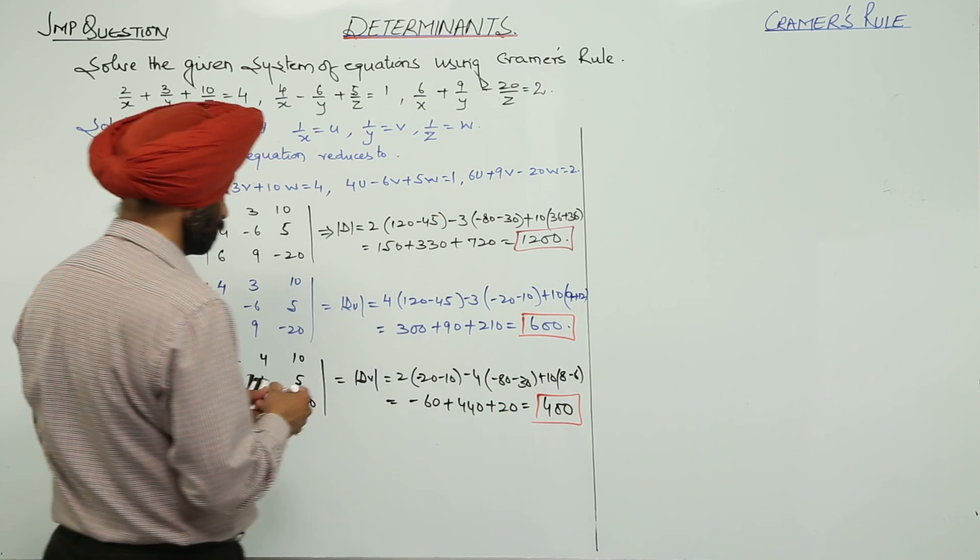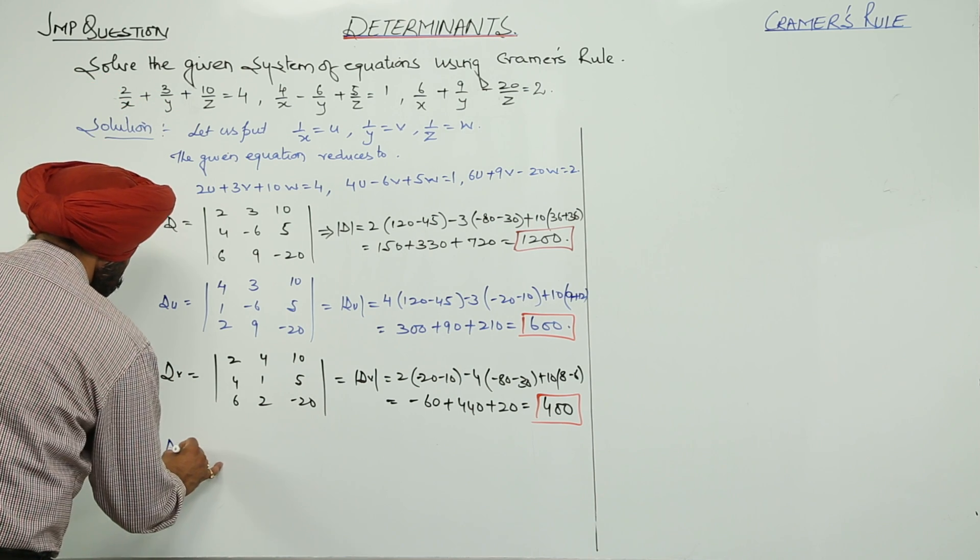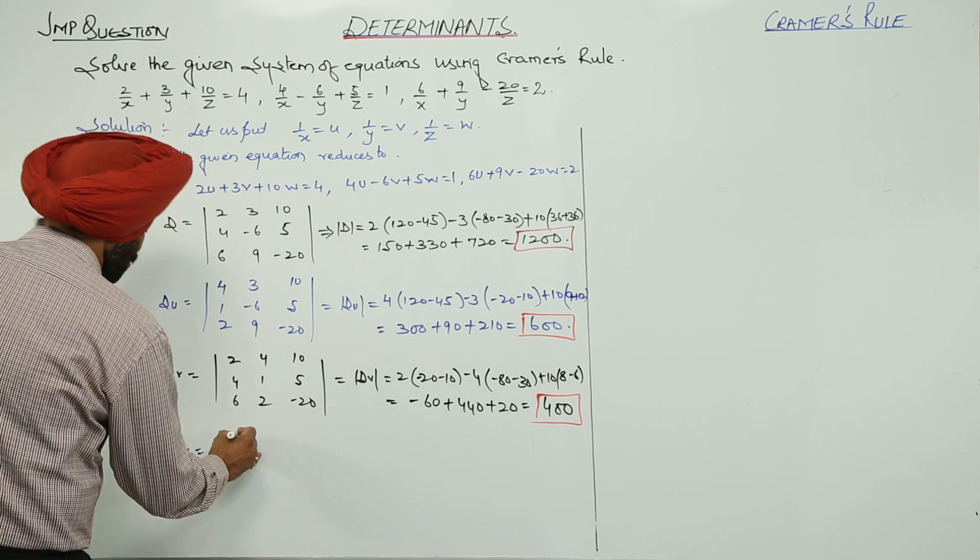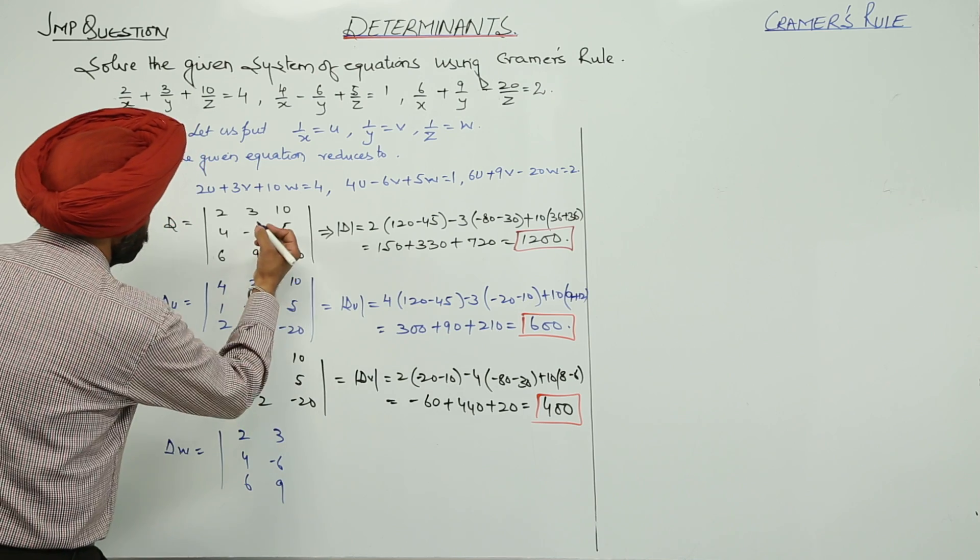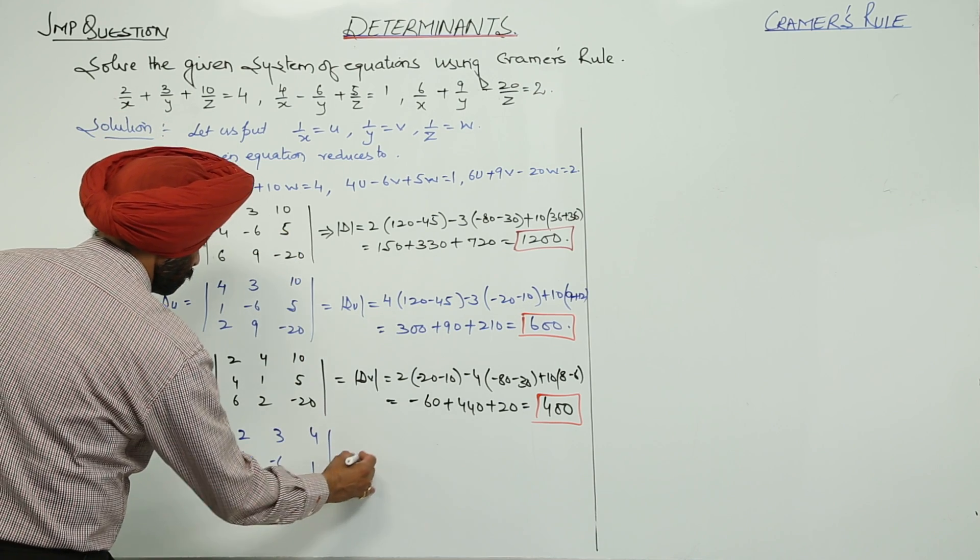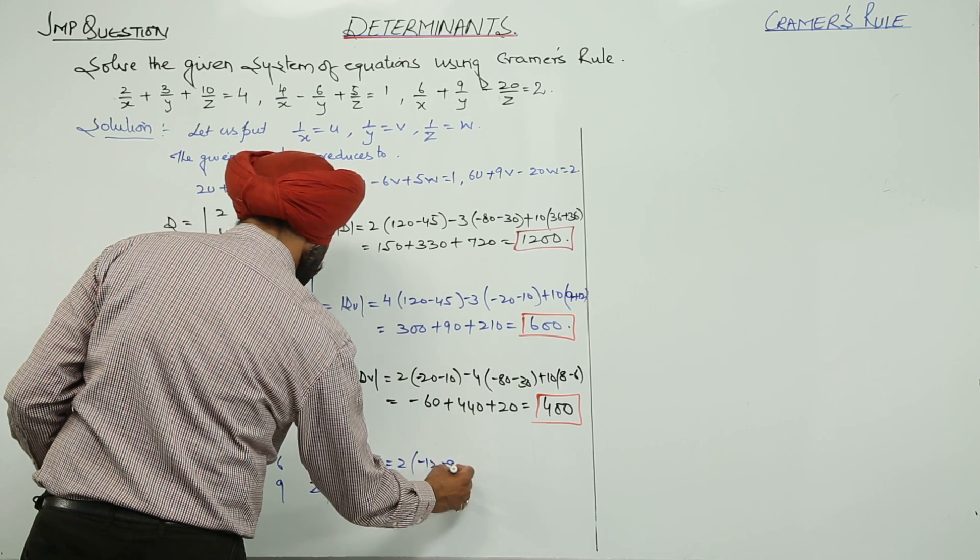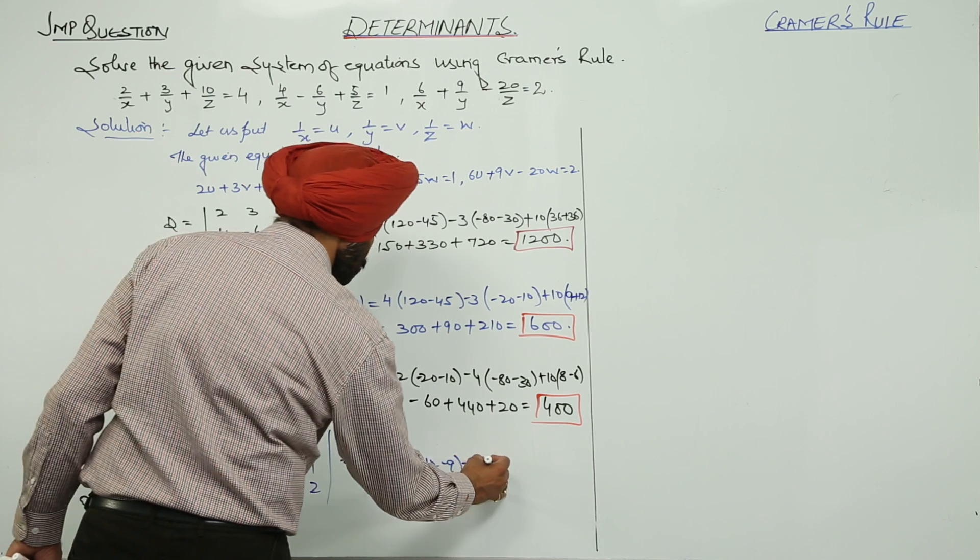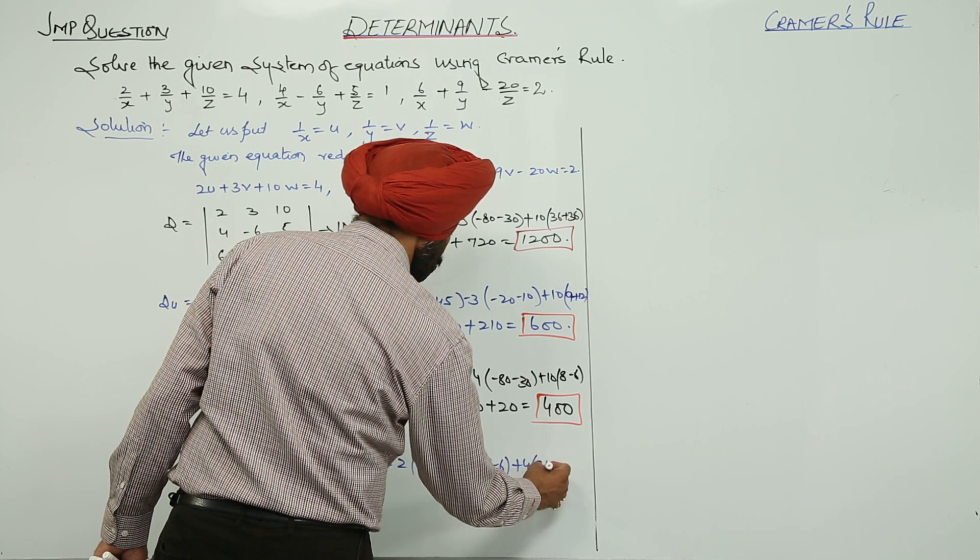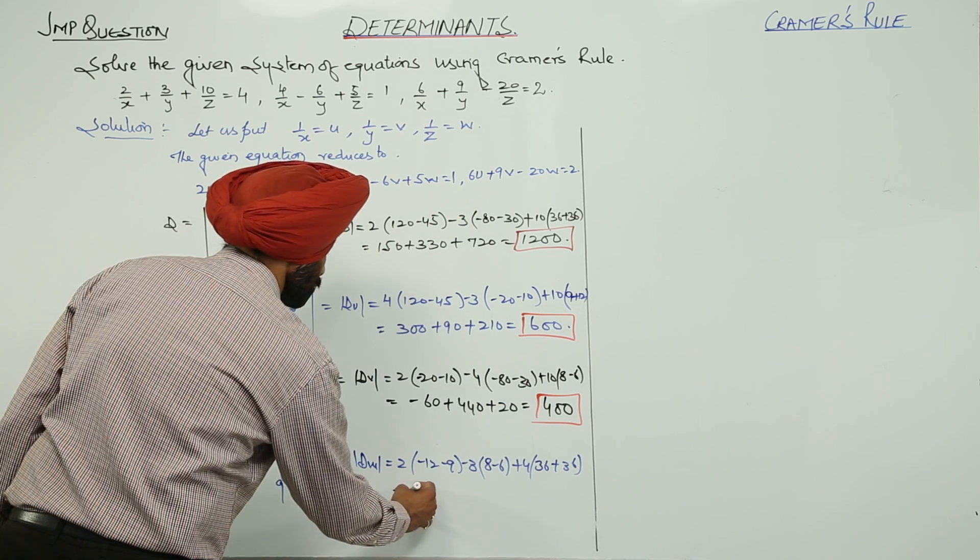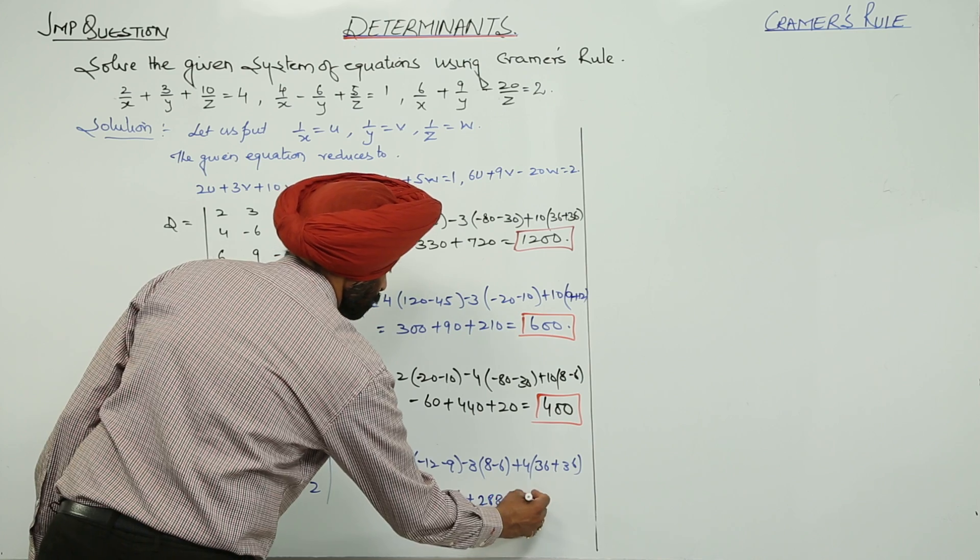Then the last one. First 2 as it is row columns, 2, 4, 6, then 3, negative of 6, 9. Now, we are going to change the third one, that is 4, 1, and 2. 2 with negative of 12, negative of 9, negative of 3 with 8, minus 6, plus 4 with 36, plus 36. This becomes negative of 42, negative of 6, plus 288. This is equal to 240.